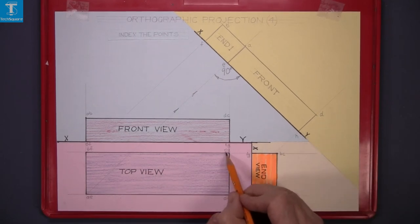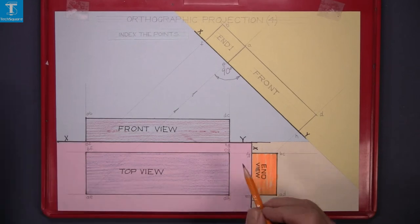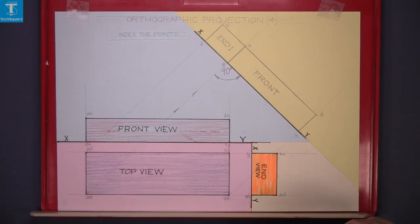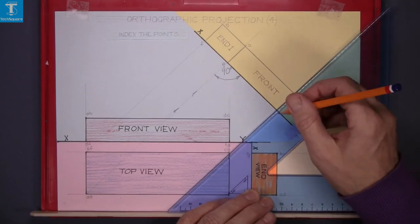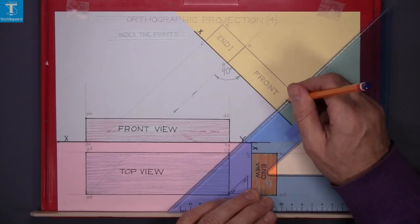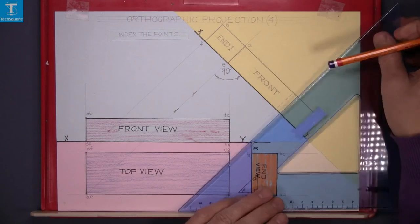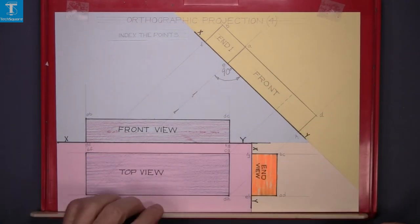Now this point here is behind and we can't see them, so we indicate those with a dotted line. We draw it up, and a dotted line represents a line that cannot be seen.